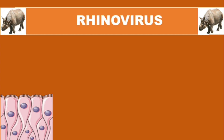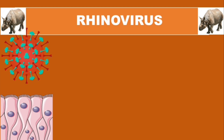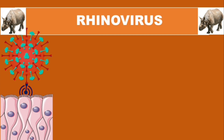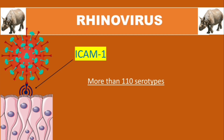Represented here are pseudostratified columnar epithelial cells in the upper respiratory tract. When the virus arrives, it attaches to a specific molecule found in these cells called intercellular adhesion molecule, or ICAM-1. The other name for this molecule is CD54.